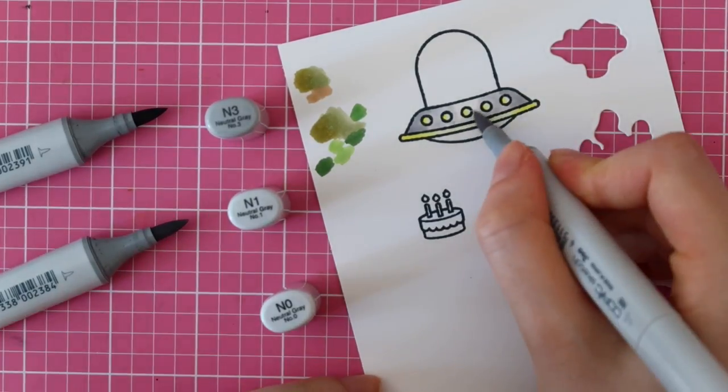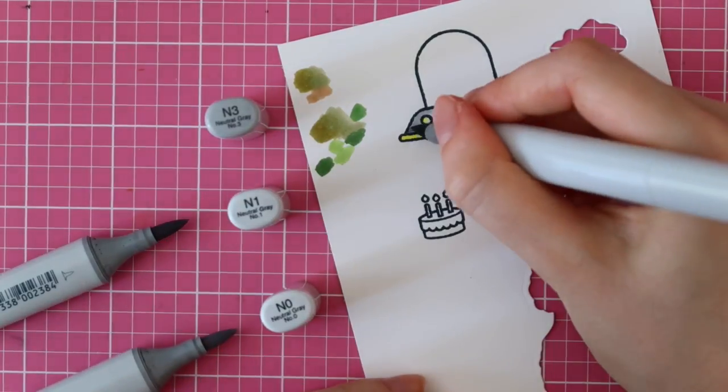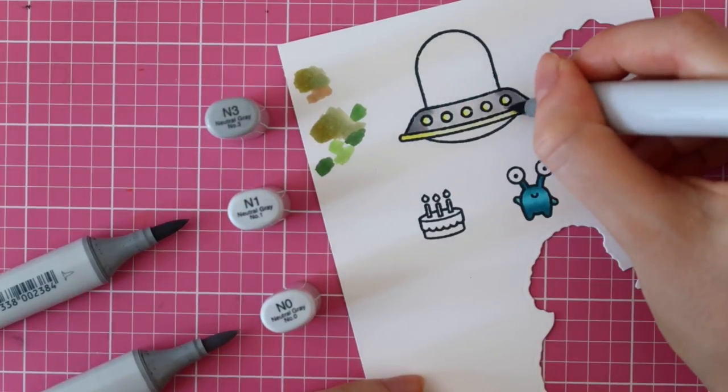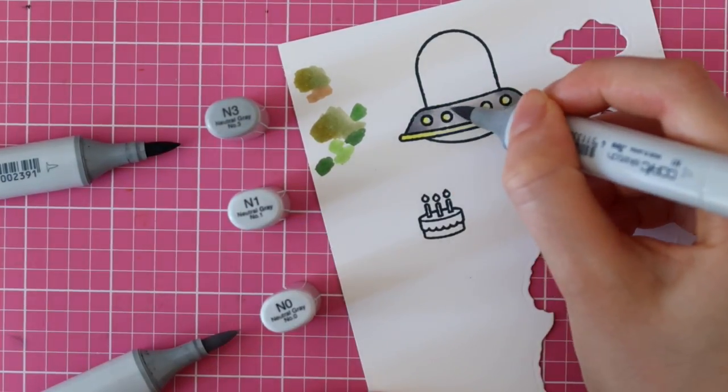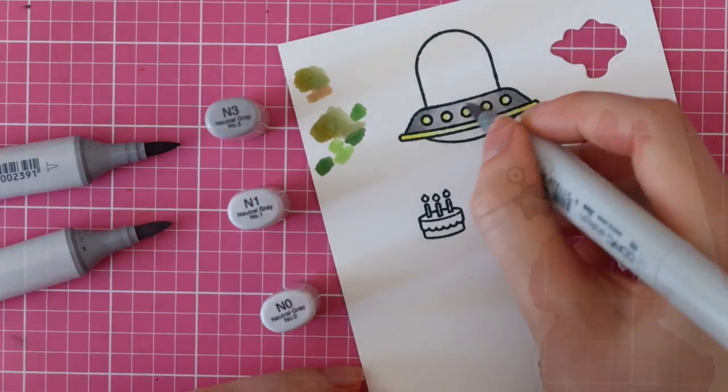Then for the spaceship, I'm using N3, N1 and N0. And as you can see I had to go back twice in order to get some nice shading.